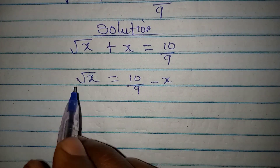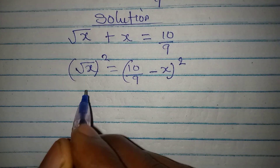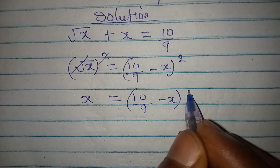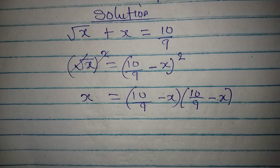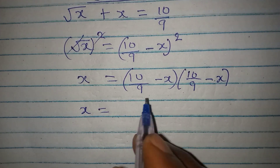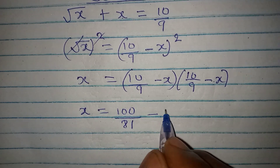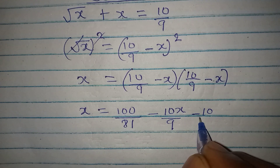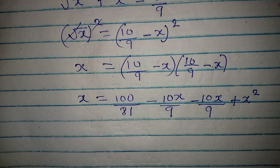Now we square both sides so that x will be alone. We have x equal to 10 over 9 minus x, multiplied by 10 over 9 minus x, because of the square. Opening the brackets, x equals 10 times 10 which is 100, then 9 times 9 is 81, then minus 10x over 9, then minus another 10x over 9, then plus x squared.